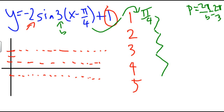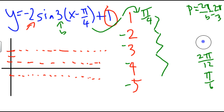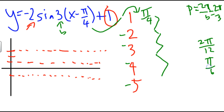In this case, b's value is 3, so when I divide 2 pi by 3, I get my period to be 2 pi over 3. Now, that's the whole period. I want to divide it up equally amongst the next four points, so I'm going to take that period and divide by 4. That's the same as multiplying by one-fourth, so I get 2 pi over 12, which reduces to pi over 6. That means I'm going to take the starting point pi over 4 and add pi over 6 repeatedly to each point.